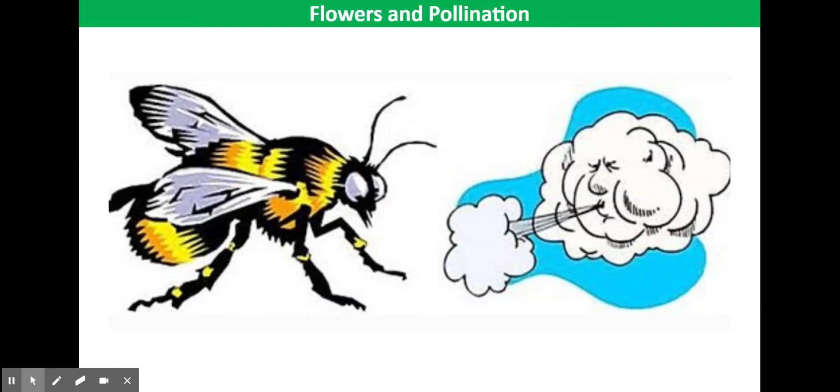This video tutorial looks at flowers and pollination. You need to be able to describe the structures of an insect pollinated and a wind pollinated flower and explain how each is adapted for pollination.